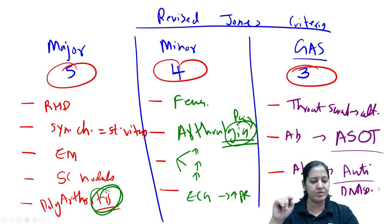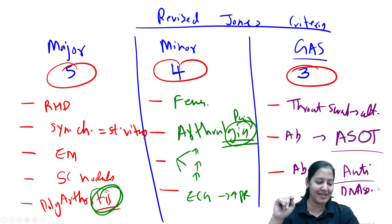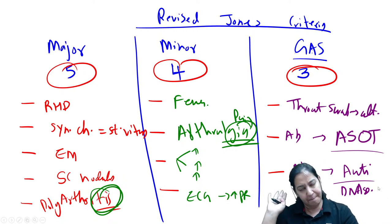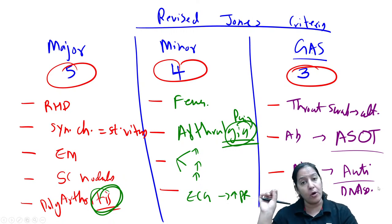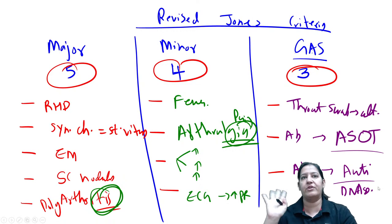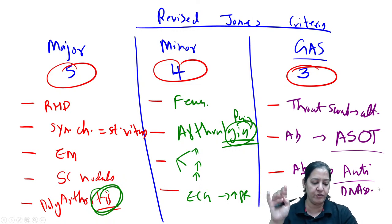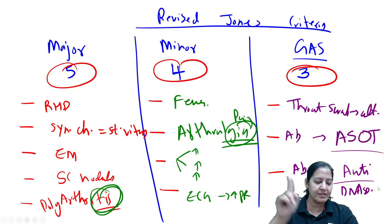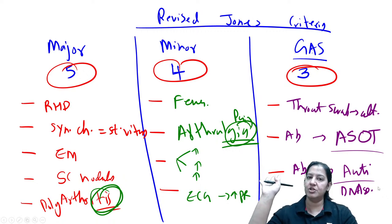Regarding monoarthritis: monoarthritis is an exception and is not included in any of the criteria. Outside India, in some patients with rheumatic fever, monoarthritis has been observed, but it does not fall under major or minor criteria.